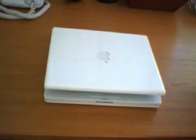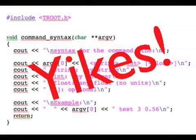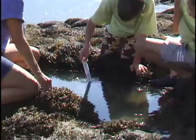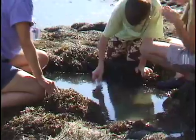Behind the computer screen, EcoBeaker Main Explorer is made of computer code — specifically a computer language called C++. Here is what it looks like. Yikes. It is sort of English, but only sort of. Learning C++ might be as hard as learning ecology in the field, and would take you as long, too.